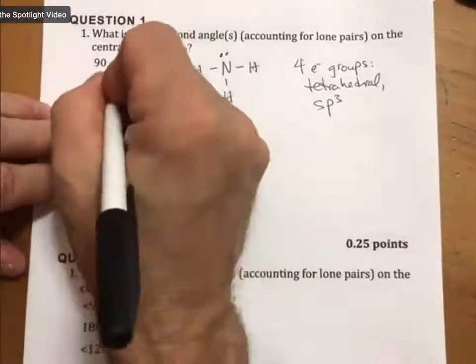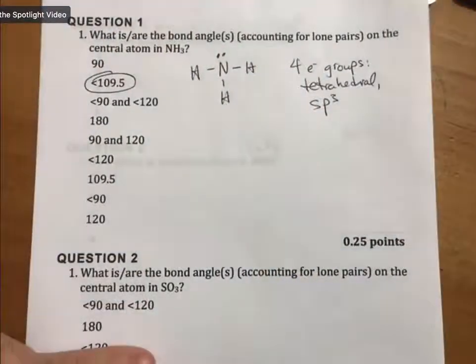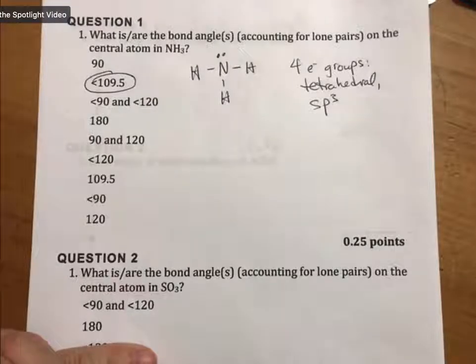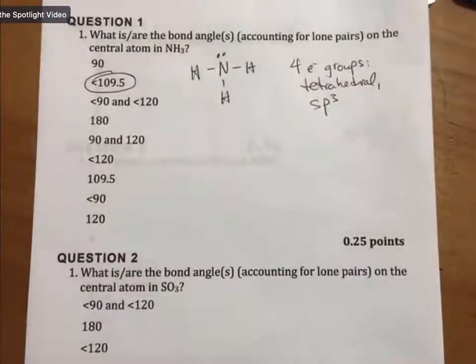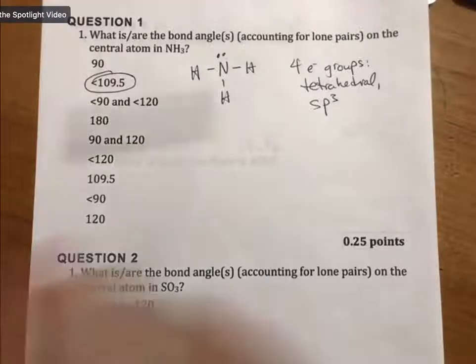Except that since there's a lone pair of electrons on the central atom, you have to circle less than 109.5. That's why it's important. Another reason it's important to be able to draw a good Lewis structure is you have to be able to know how many, if any, pairs of electrons are on that central atom.